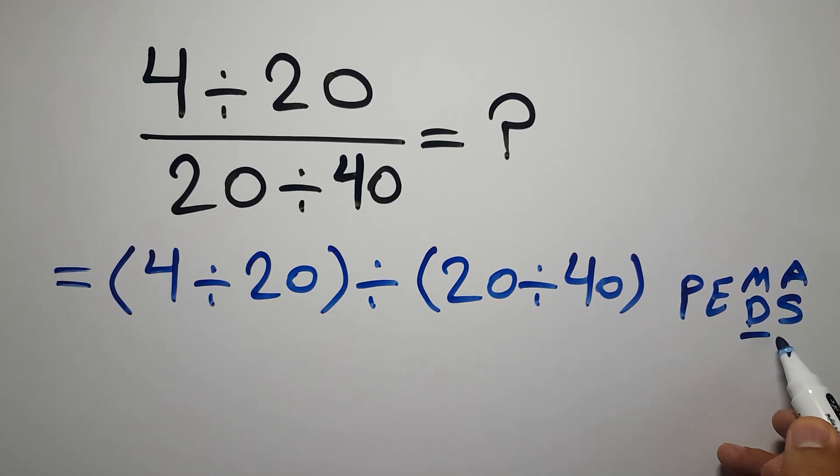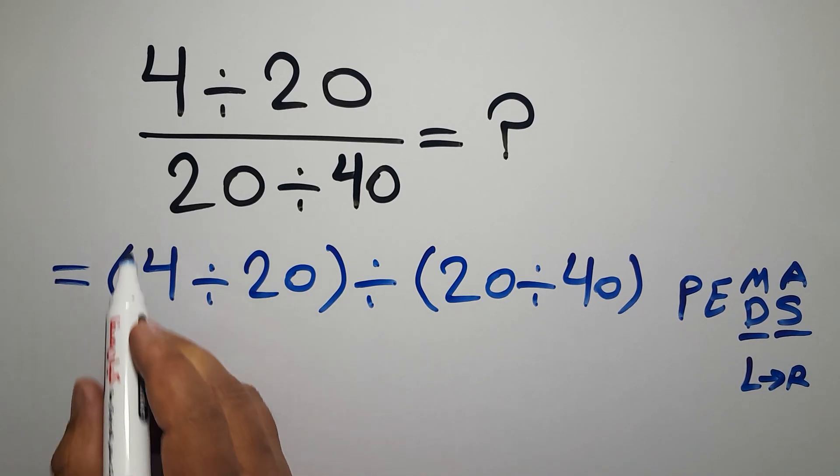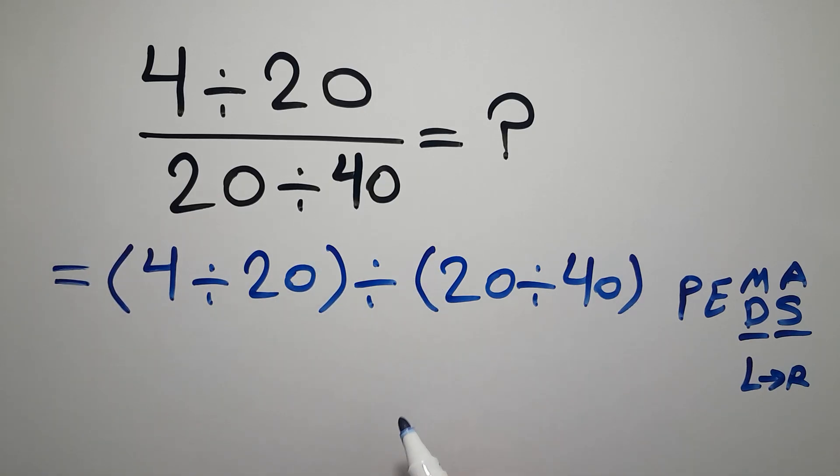Remember that multiplication and division have equal priority, and we have to work from left to right. The same applies to addition and subtraction. So here, first we have to do these parentheses and these parentheses.